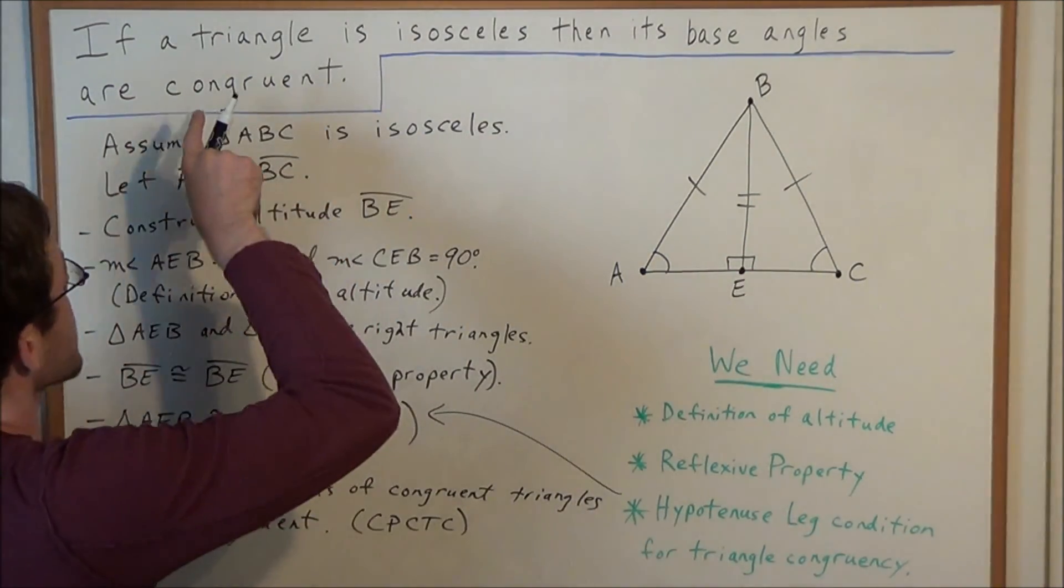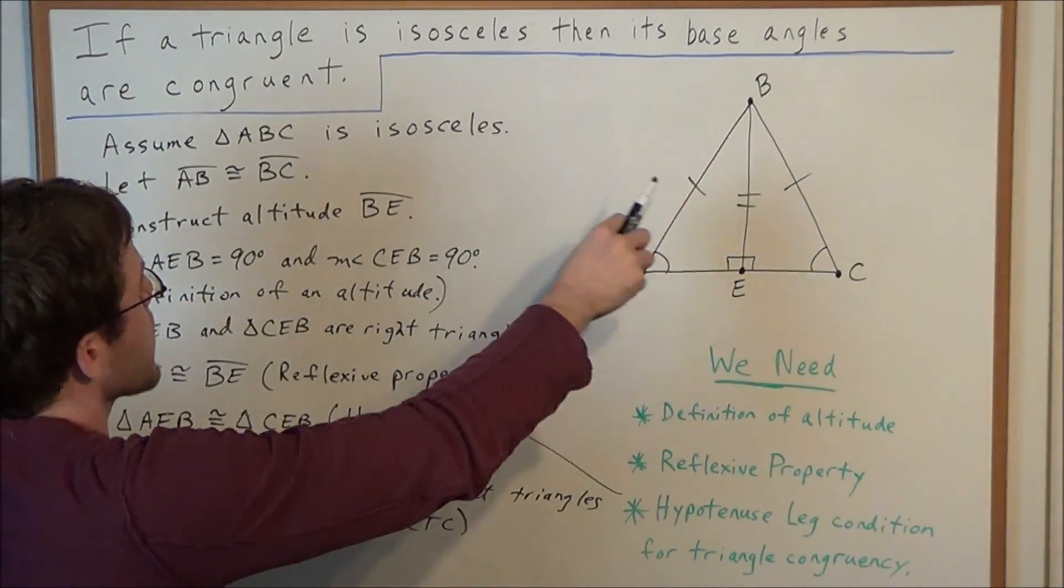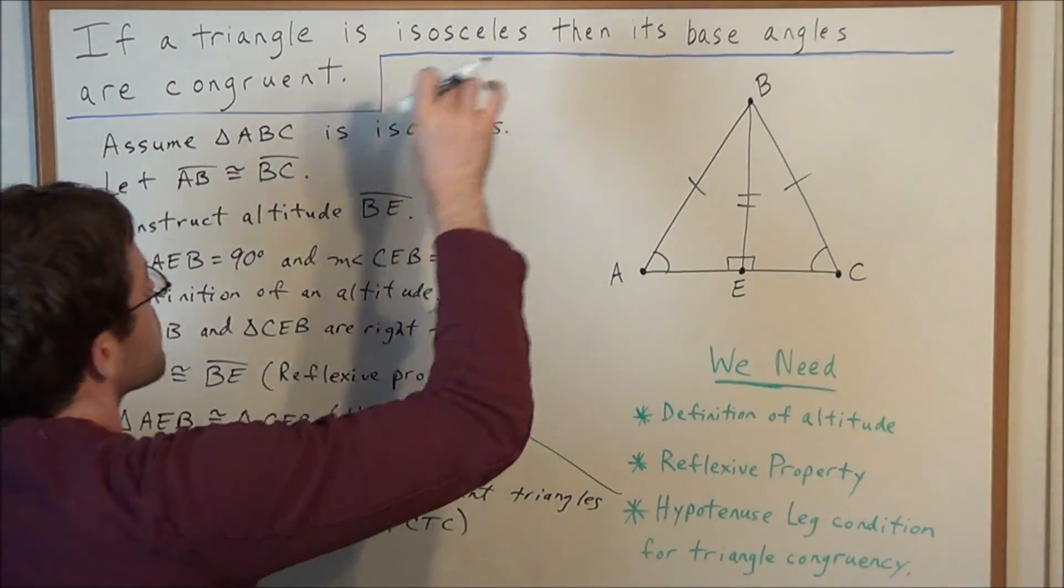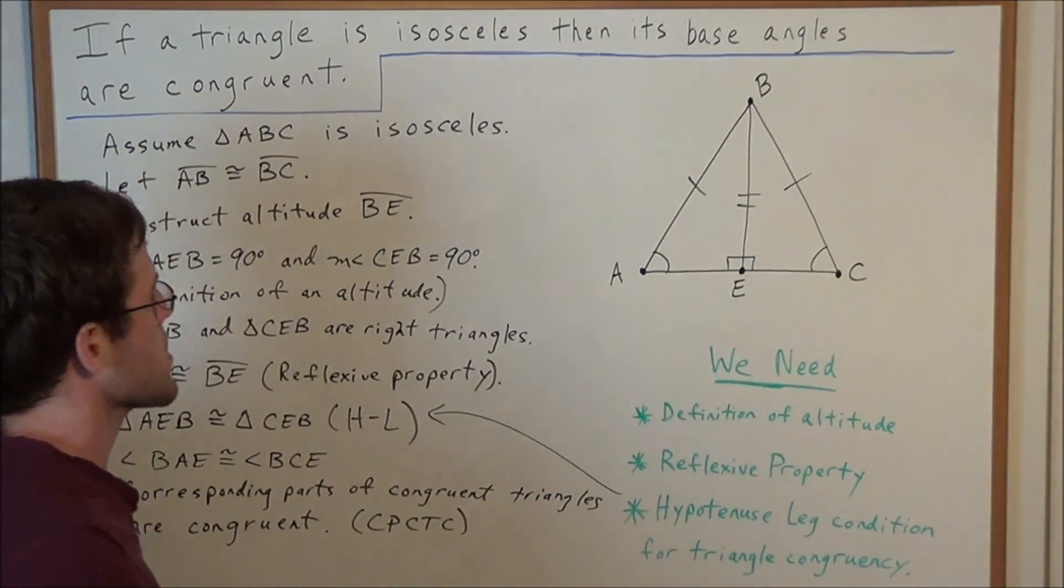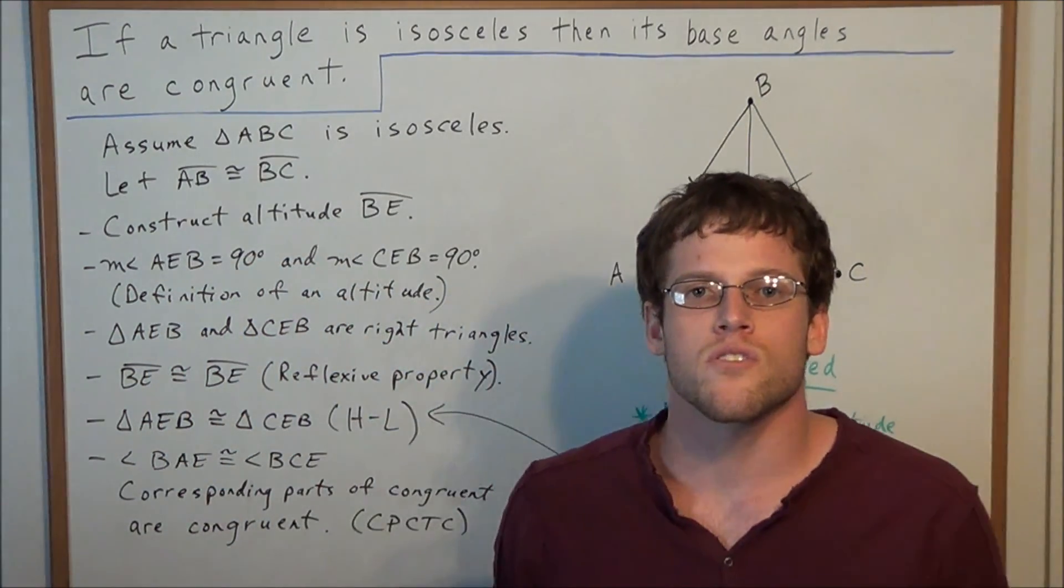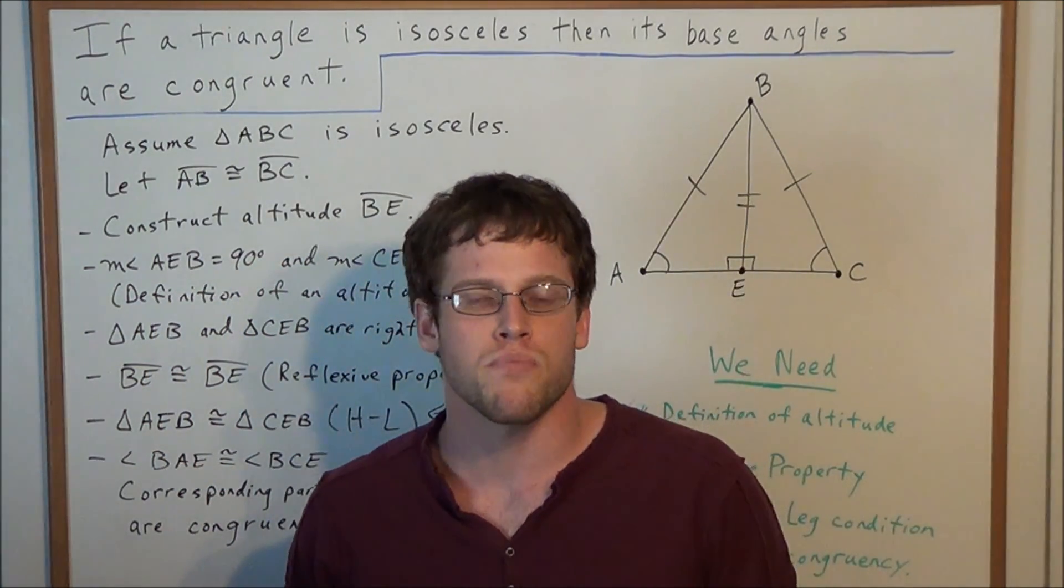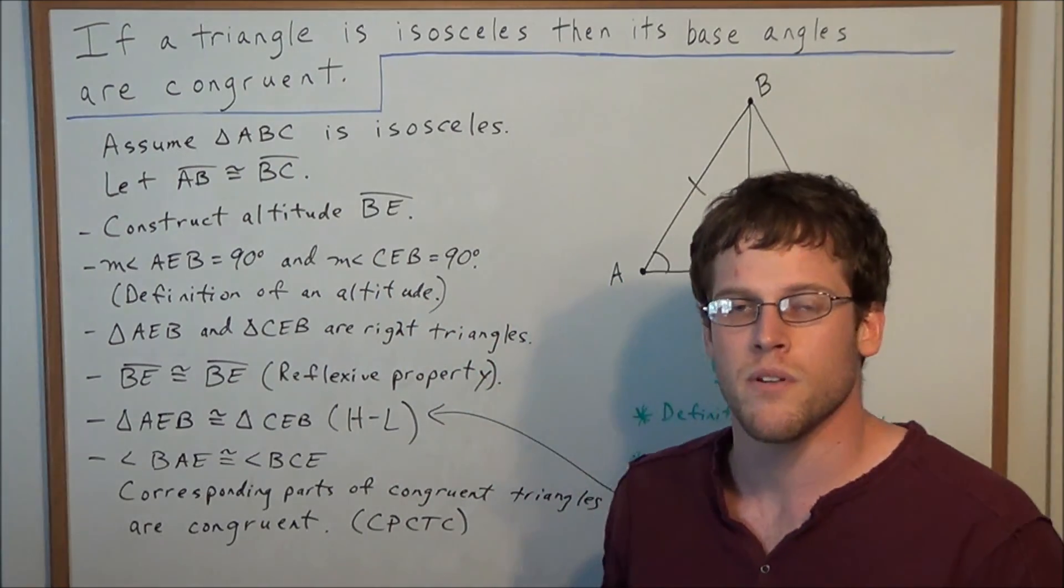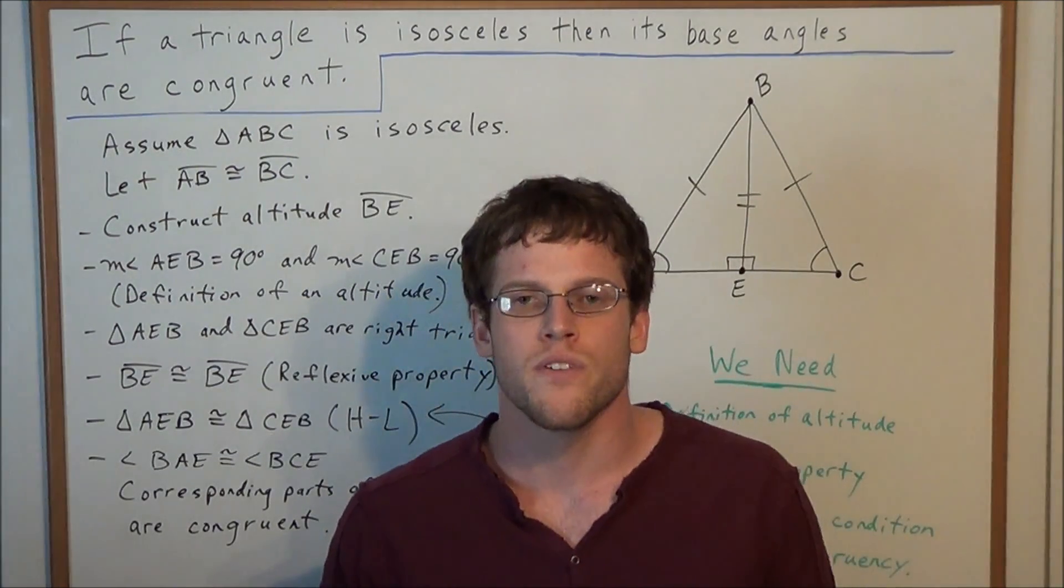But this proves exactly what we were trying to show in this statement. We have some isosceles triangle, and we show that the base angles of this isosceles triangle are, in fact, congruent. Okay, well, this is going to conclude this proof of this properties of isosceles triangle statement. Thank you all for watching, and I hope this video was helpful.